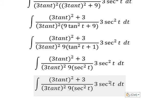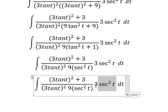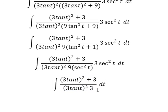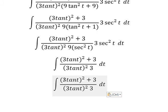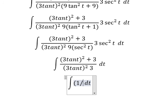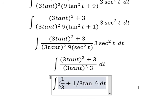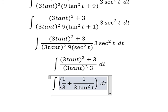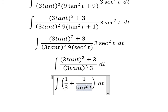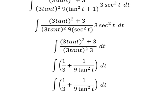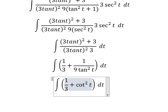We simplify 3 secant squared t for this one. So this one divides this one, and number 3 divides this number 3. So we create two fractions in here. The first one is about 1 over 3, and the second one is about 1 over 9 tan squared t.